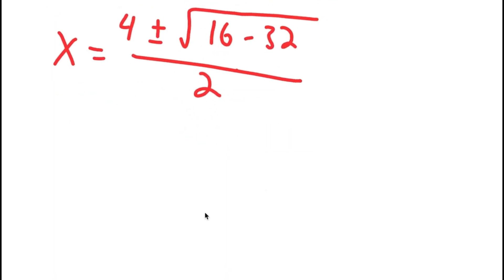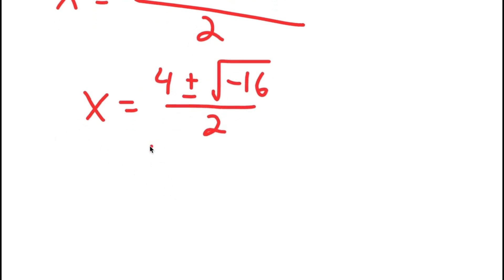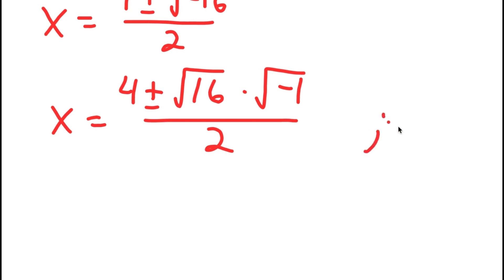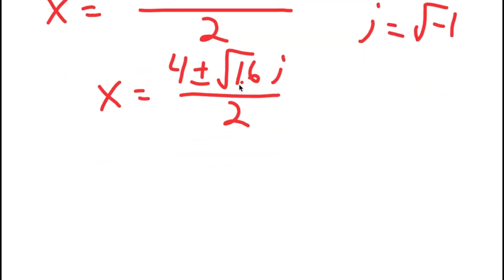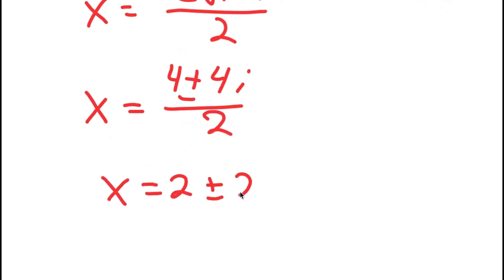This simplifies to 4 plus or minus the square root of negative 16, over 2. The square root of negative 16 equals the square root of 16 times the square root of negative 1, and since i equals the square root of negative 1, I get 4 plus or minus 4i over 2, which equals 2 plus or minus 2i.